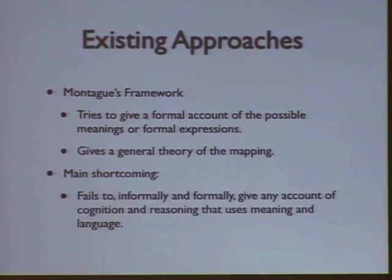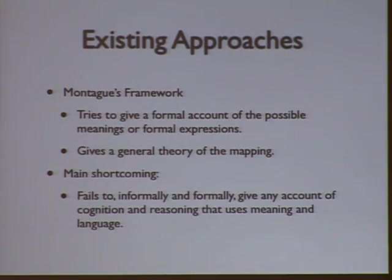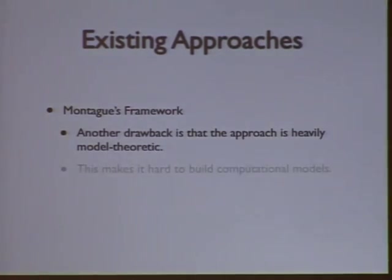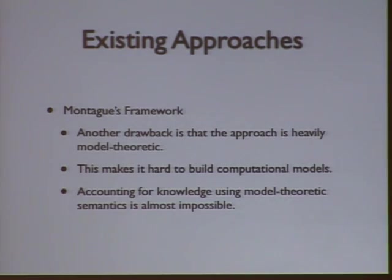I'll briefly cover current literature on natural language processing formalization. We have two main types. One is based on Montague's framework, which tries to do something similar to what I'm proposing: give a formal account of the possible meanings of natural language statements and a general theory of how to map natural language statements to those formal structures. One main problem, according to critics, is that it apparently fails to give an account of cognition and reasoning that uses meaning and language. There are other critiques too — notably that it's too heavily model-theoretic.